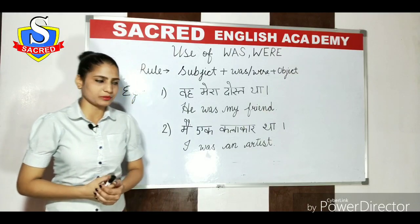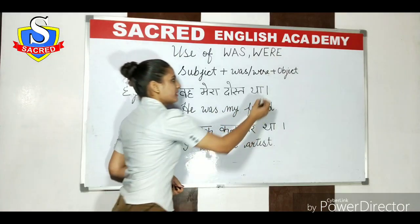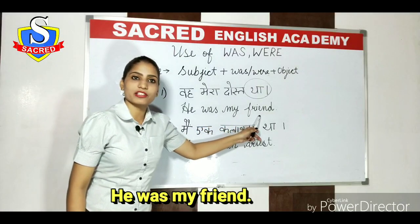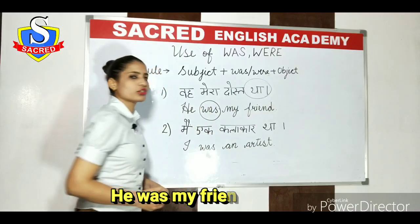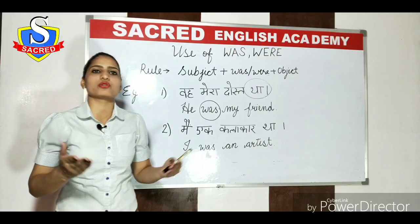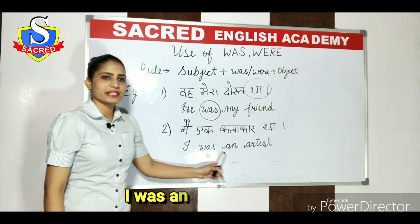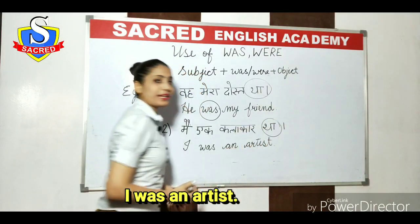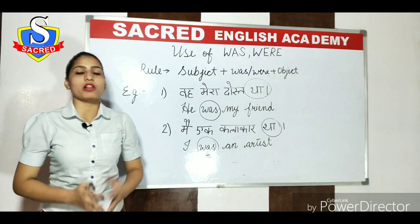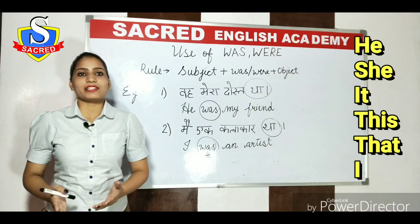So let's discuss it with an example. The first is: 'Woh mera dost tha.' Past ki baat hai — 'tha' se pata chalta hai. So how can we write it in English? 'He was my friend.' As I told you, to represent past, you have to use 'was' or 'were'. Yahan pe kyunki singular cheez ki baat ho rahi hai, ek hi insan ki baat ho rahi hai, to you have to use 'was'. Our next sentence is: 'Main ek kalakar tha' — 'I was an artist.' Yahan pe bhi, in the place of 'tha', you have to use 'was'. Ab aapko yeh bata dun ki aap 'was' ka istamal aur kin cheezon ke saath kar sakte hain — you can use it with he, she, it, this, that and I.